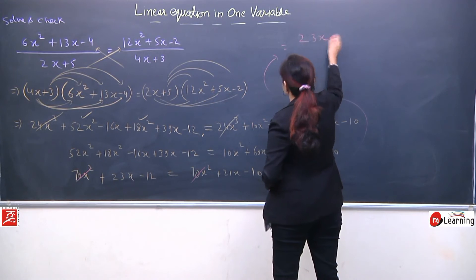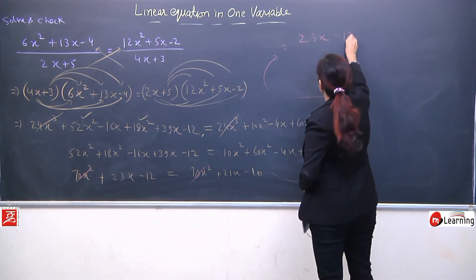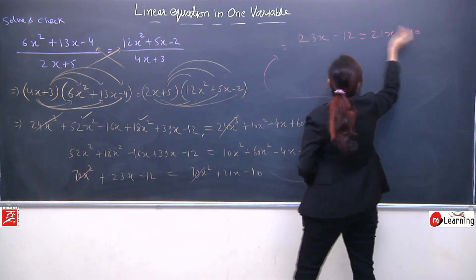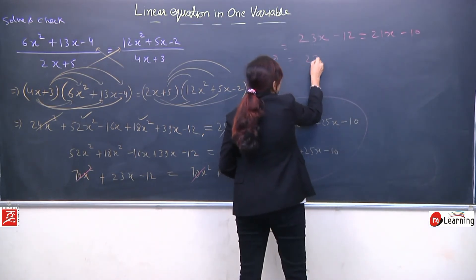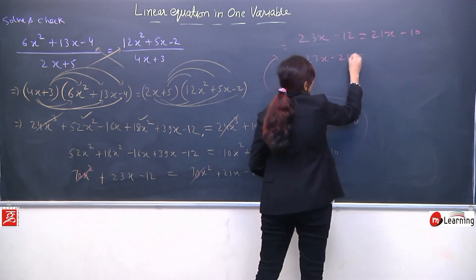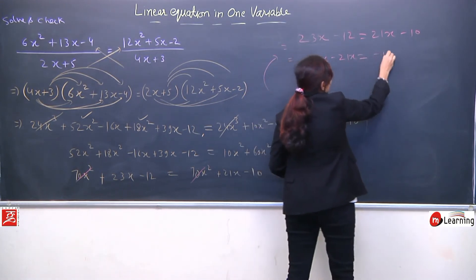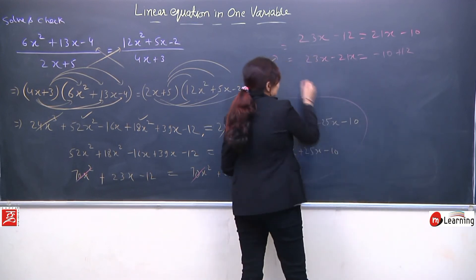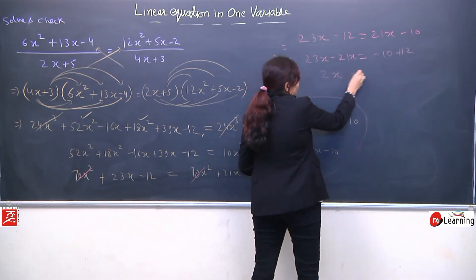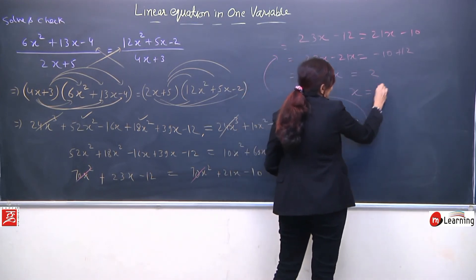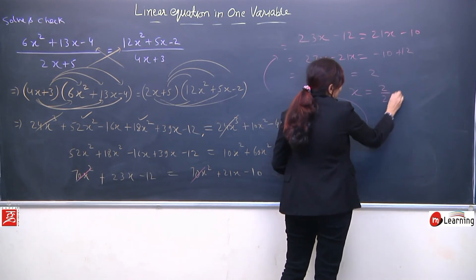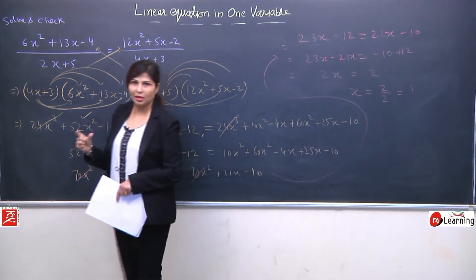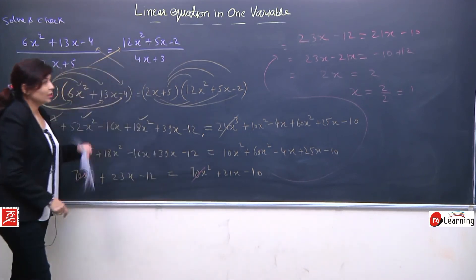23x minus 21x is equal to minus 10 plus 12 — simple collection of terms. 2x is equal to 2, so x equal to 2 upon 2 means 1. Kitna chhota sa answer aaya jabki equation kitni complicated thi!